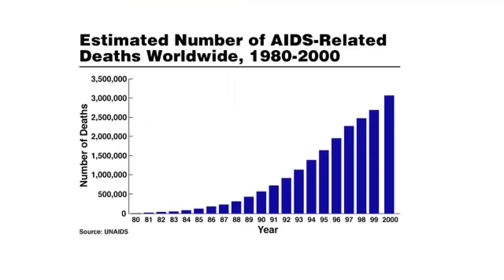This observation led scientists to suspect that HIV has not been a human virus for very long. If it was a virus with a lot of history with humans, it's unlikely that it would still be so pathogenic.